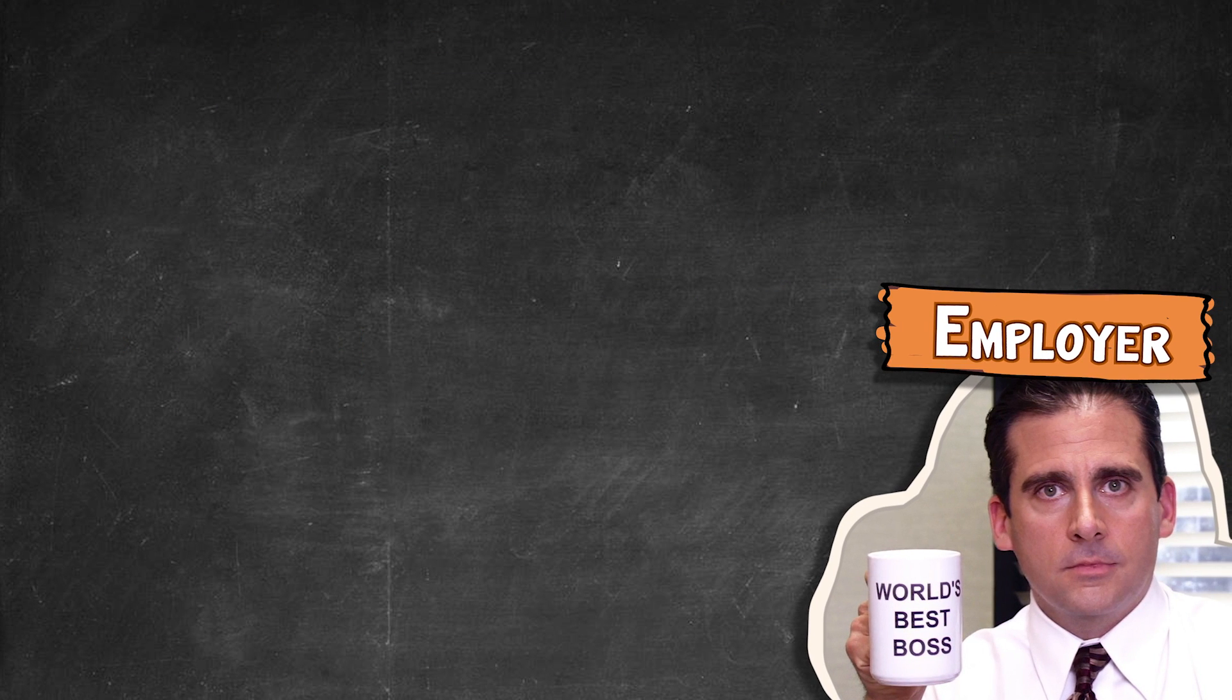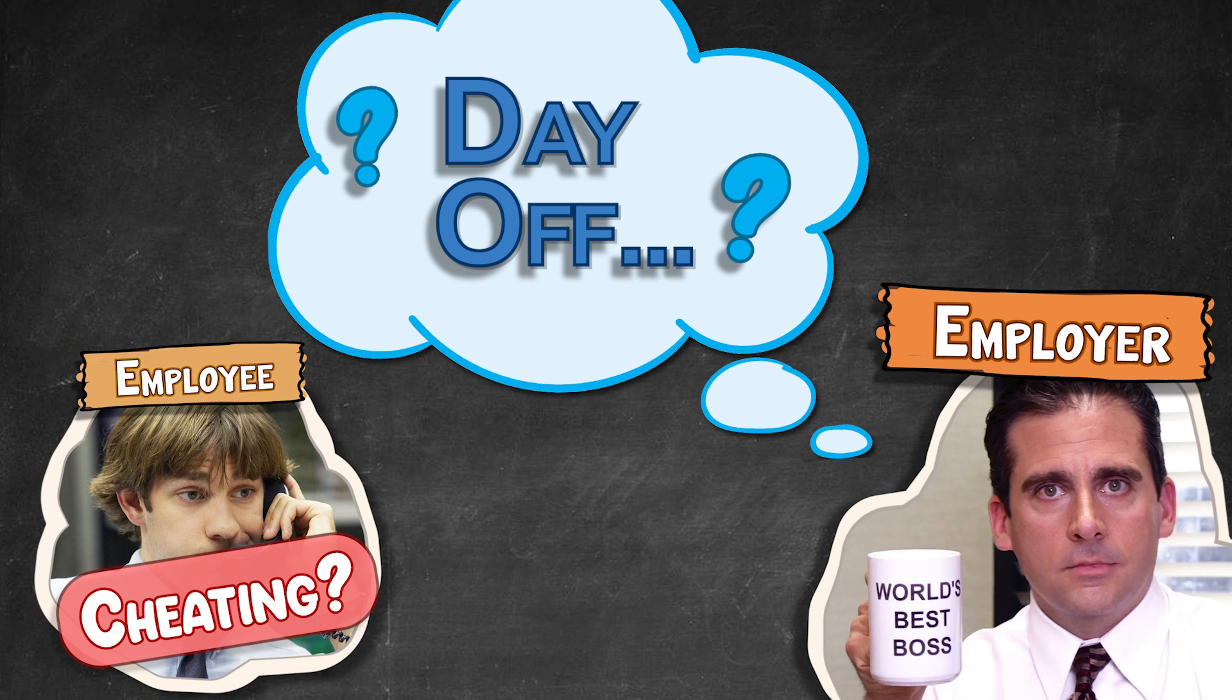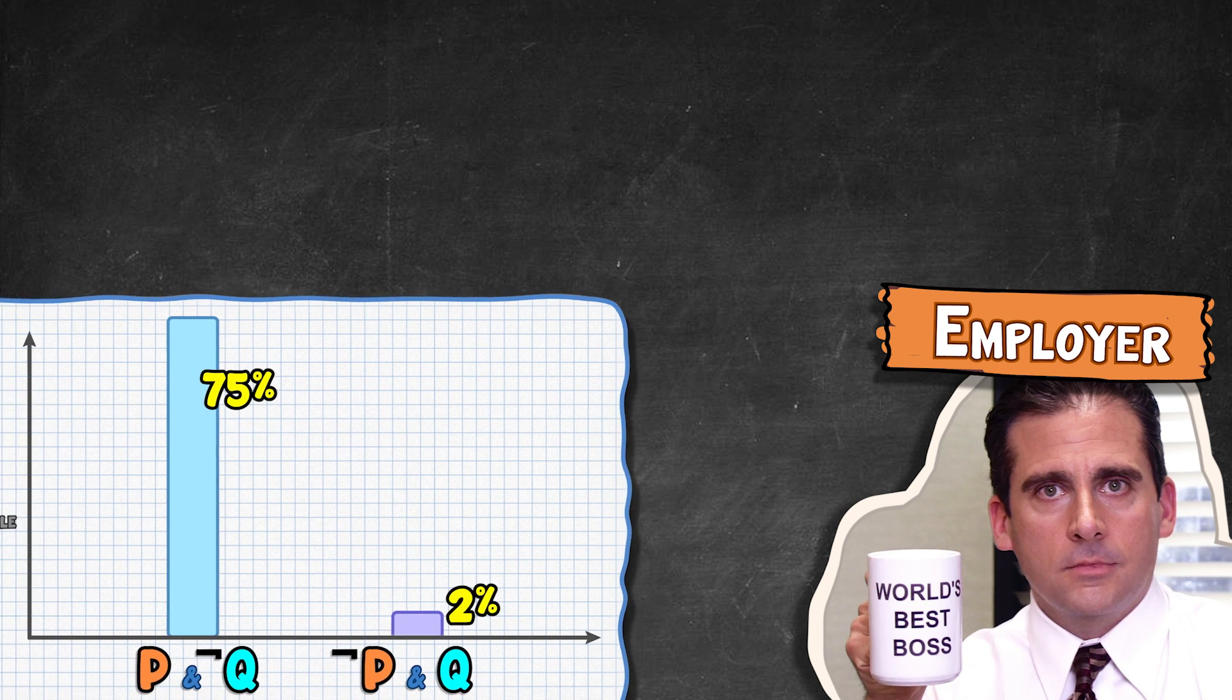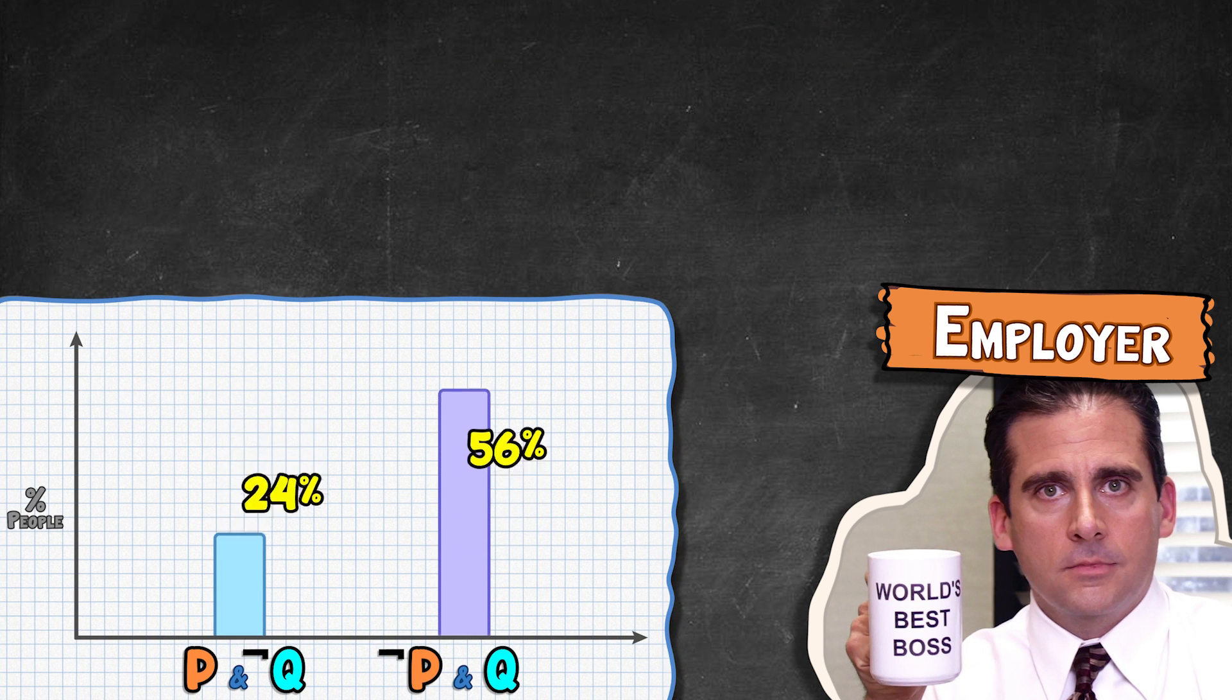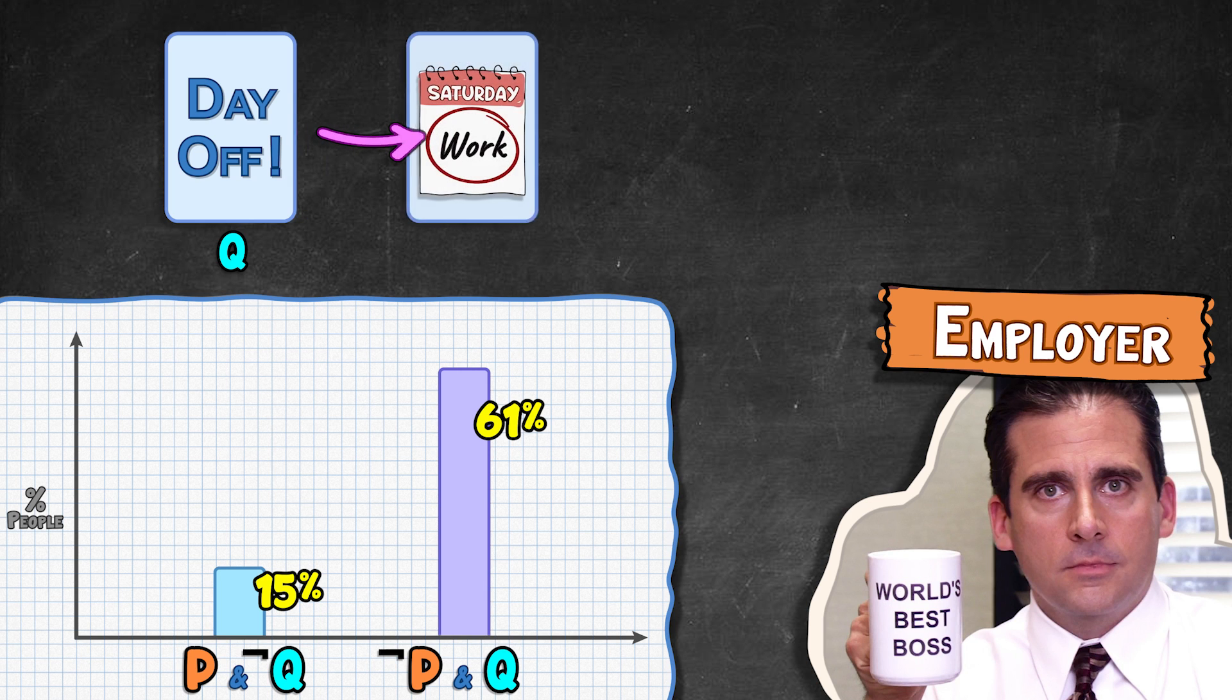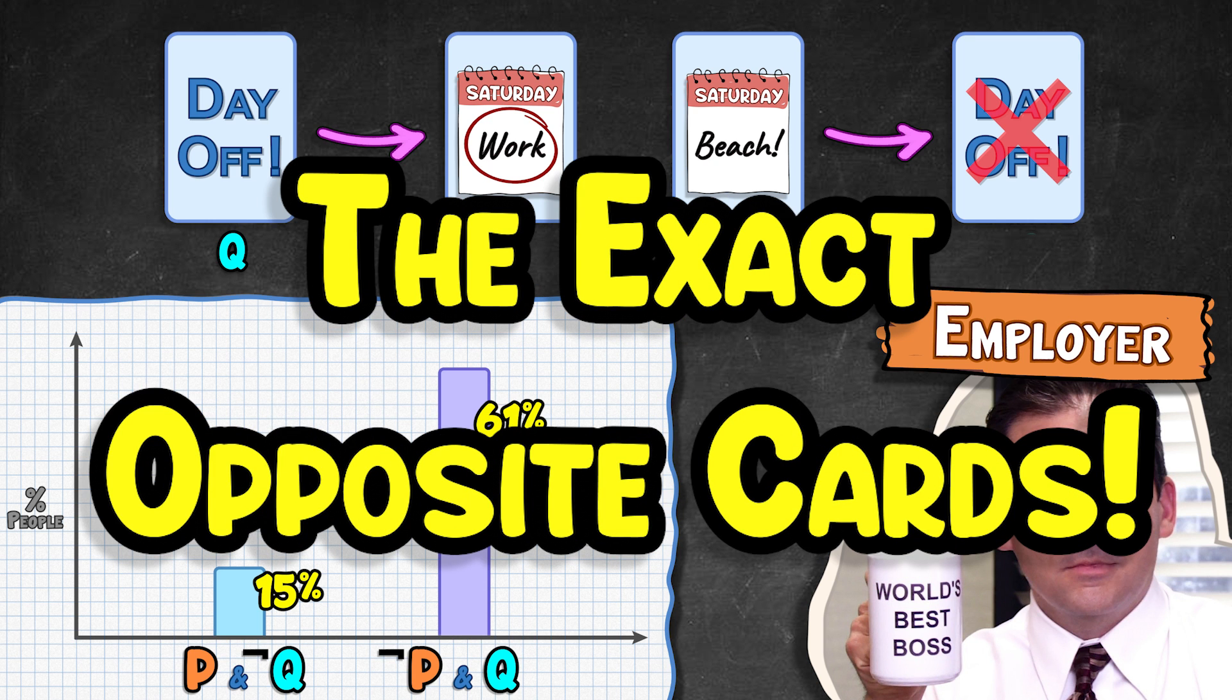However, as the employer, people are cued into the other perspective. They are told they are considering allowing their employees to have the day off, but have heard that some employees might not be holding up their end of the bargain, that some employees might not be working the weekend day, but then taking the extra day off anyways. In this perspective, most people choose the exact opposite. They choose to flip over the Q card to verify people who do get the day off did in fact work the weekend day, and flip over the not P card to verify if people did not work the weekend day, they didn't get the day off. The exact opposite cards you need to flip over.